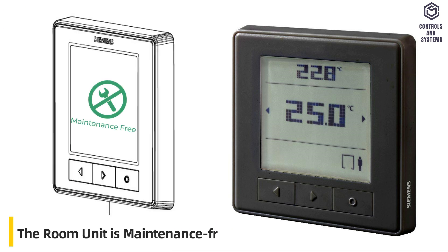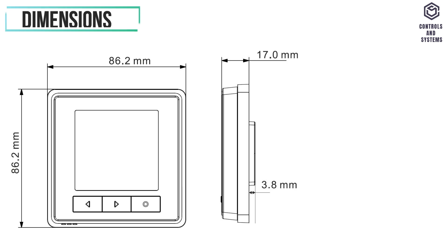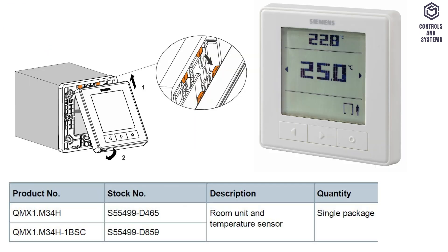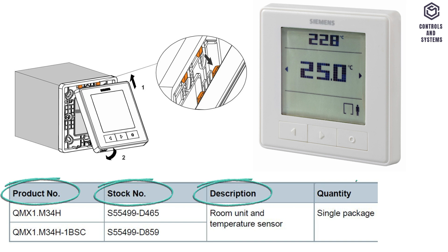The room unit is maintenance free. Dimensions: height 86.2 millimeters, length 86.2 millimeters, depth 17 millimeters. This table displays room unit types, product numbers, stock numbers, and descriptions.